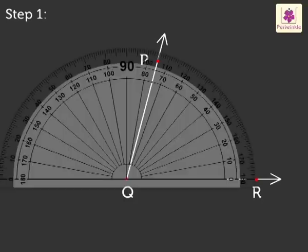Step 1. Place the central point of the protractor on the vertex Q of angle PQR.